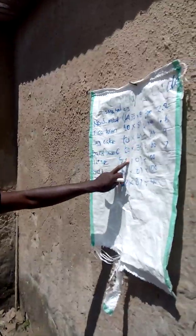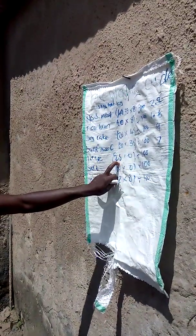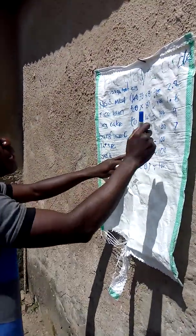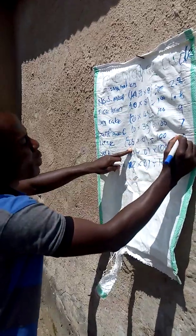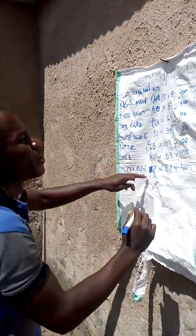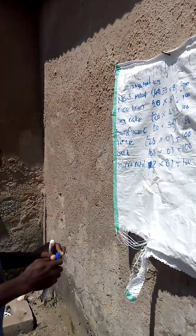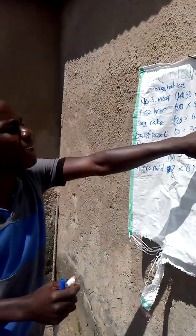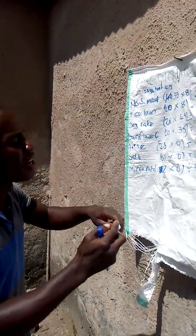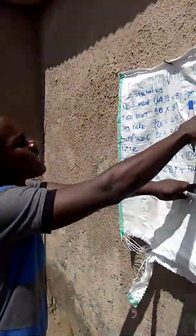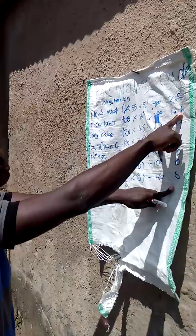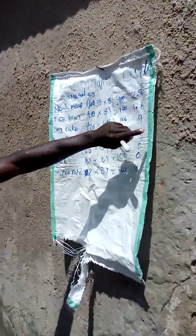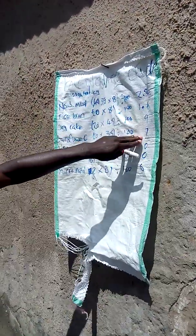For lime and salt: 0 times anything is 0, so their crude protein contribution is 0. Now doing the addition: 9 plus 7 is already 16, then 16 plus 2.8 plus 1.6 — that's giving me a total crude protein of around 19 to 20 percent for this 100 kg feed batch.